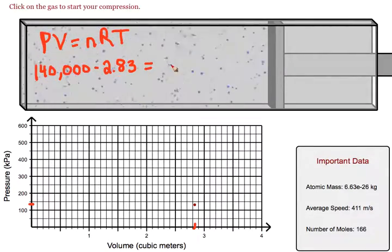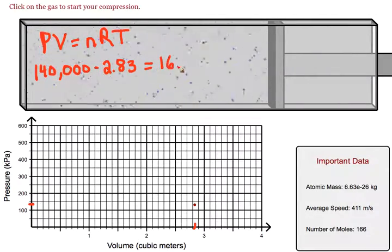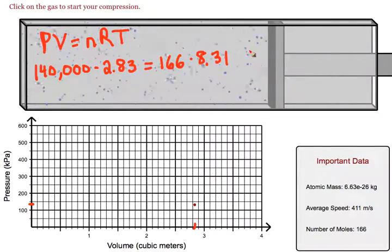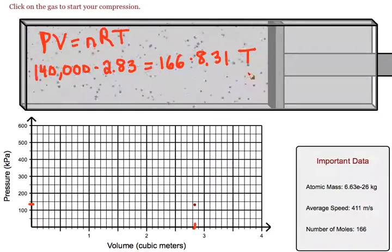Set that equal to the number of moles, 166, times the ideal gas constant, 8.31, and solve for temperature.